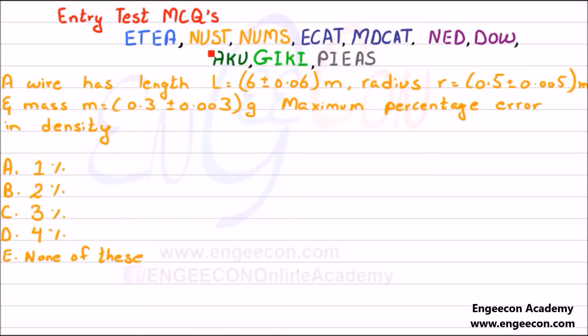Here we have MCQs relevant to entrance examinations, a favorite question of NUST, PIEAS, GIKI, and Agha Khan University. A wire has length with a measured value and error, radius with a measured value and error, and mass with a measured value and error. The maximum percentage error in density will be determined.